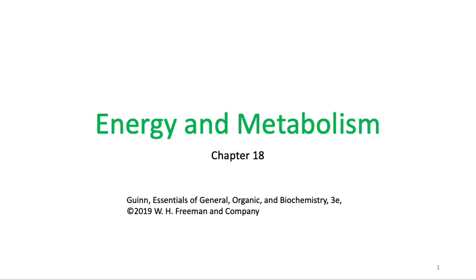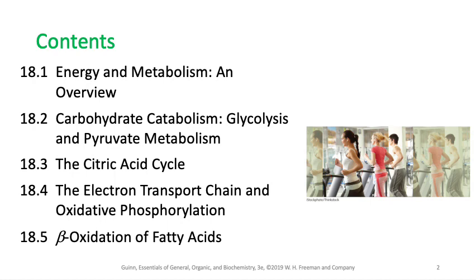In this video we're going to start Chapter 18 which is energy and metabolism. We're going to cover certain topics: we'll start with an overview of what is energy and what is metabolism, then we'll talk about biochemical pathways including glycolysis, pyruvate metabolism, citric acid cycle, electron transport chain and oxidative phosphorylation, and finally beta oxidation of fatty acids.